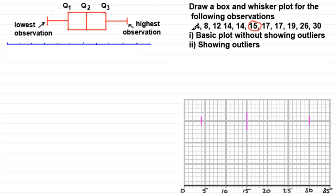For the lower quartile, we've got 5 values to the left of the median. Adding 1 gives 6, divide by 2 is 3 — so it's the third value in, which is 12. We mark in Q1 at 12. For Q3, the upper quartile, we've again got 5 values on that side — 5 add 1 is 6, divide by 2 is 3 — the third value in on that side, which is clearly 19. We mark on 19 for the upper quartile.